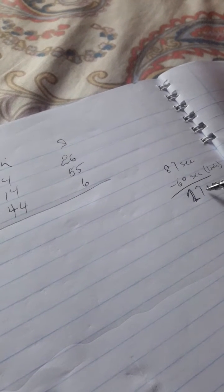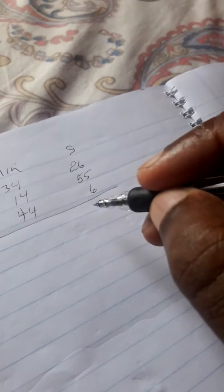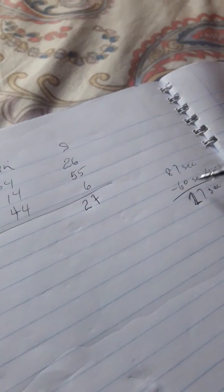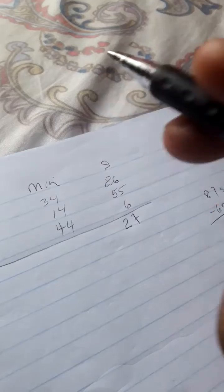So after 87 seconds, I took 60 seconds out. I'll leave 27 seconds, I should say. And 60 seconds of it goes over to the minute column as a minute. So I'm going to add a minute over here.